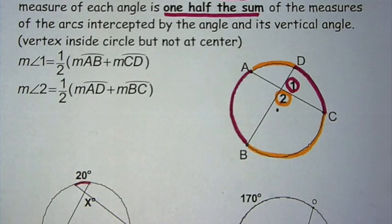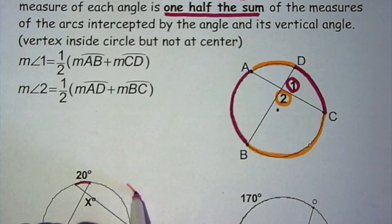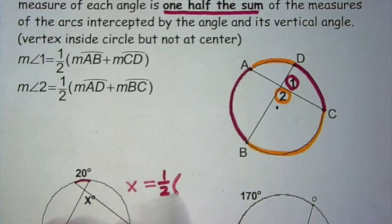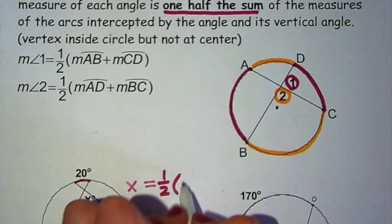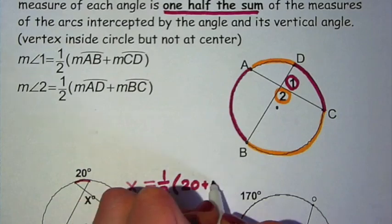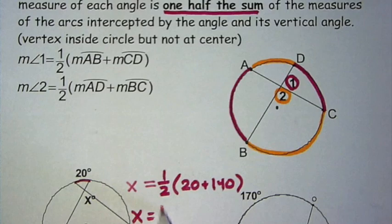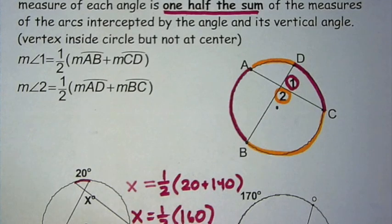Now let's look at an example. We have an angle x in the middle, and the intercepted arcs are 20 and 140. So x is one-half 20 plus 140. So x is one-half times 160. That means x is equal to 80.